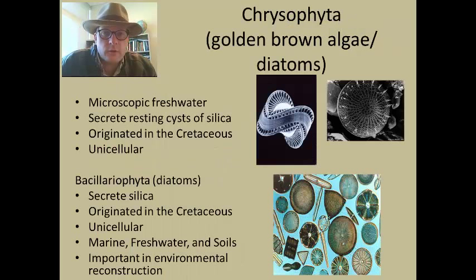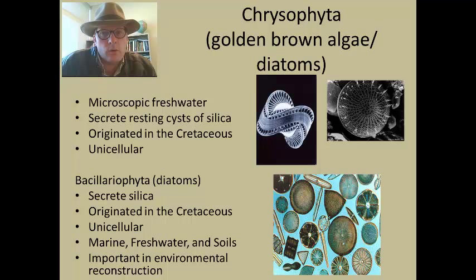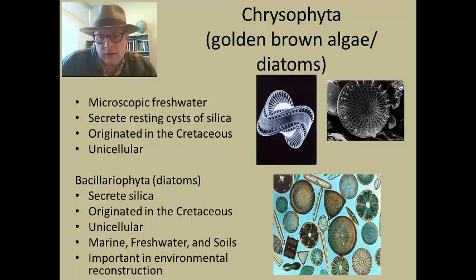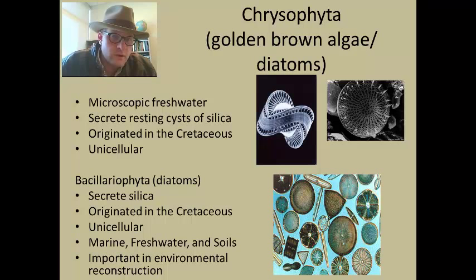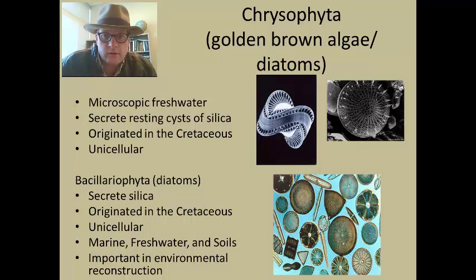The next group are the Chrysophyta — the golden brown algae or the diatoms. Most of these are microscopic and live in fresh water. One interesting thing about the diatoms is that they secrete resting cysts of silica — they're composed of a kind of glass. They originated during the Cretaceous, making them a fairly recent addition. They are unicellular, single-celled organisms. Diatoms are often placed in a group called the Bacillariophyta, and they all secrete silica. Silica is a little more resistant and harder than calcium carbonate, forming fairly rigid skeletons. They can be prepped out using simple acids like hydrochloric acid to dissolve out calcium carbonate, preserving these beautiful silica casings.